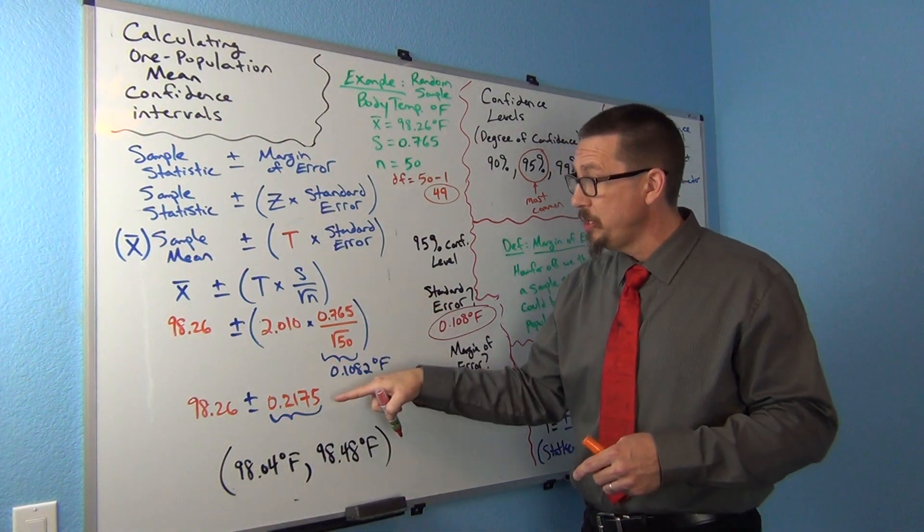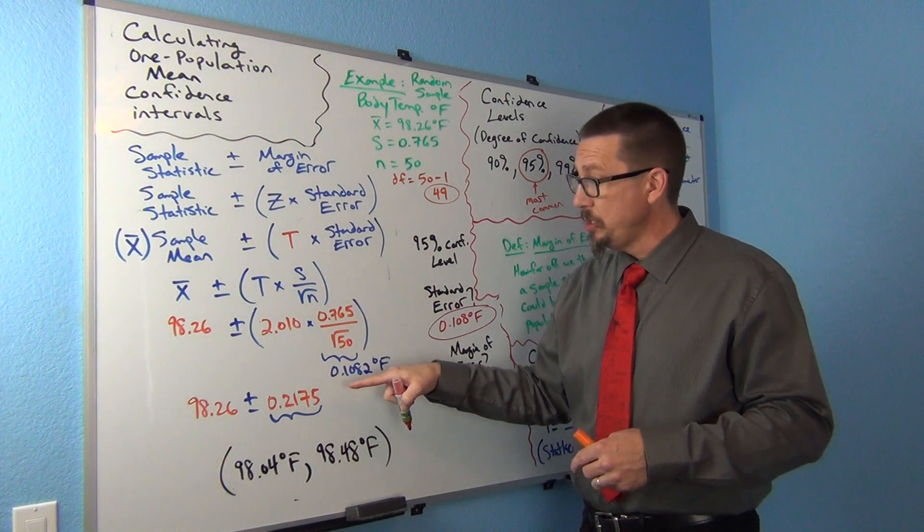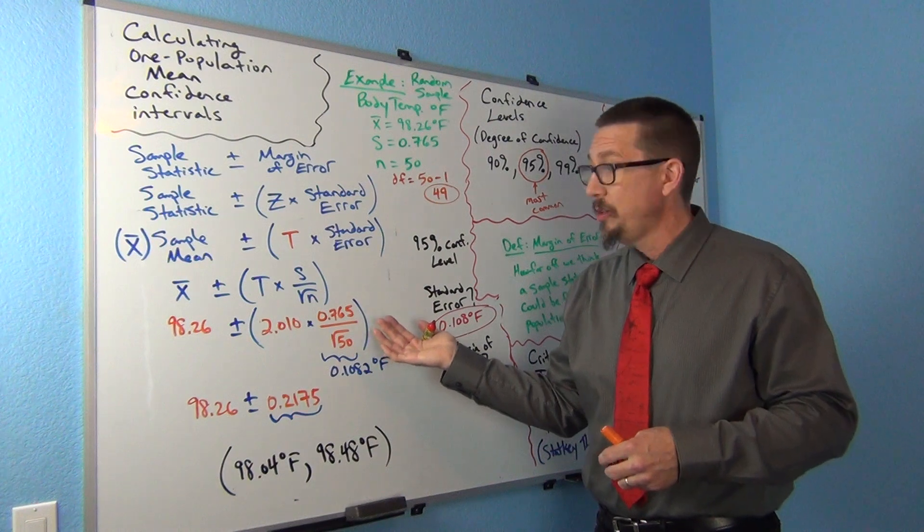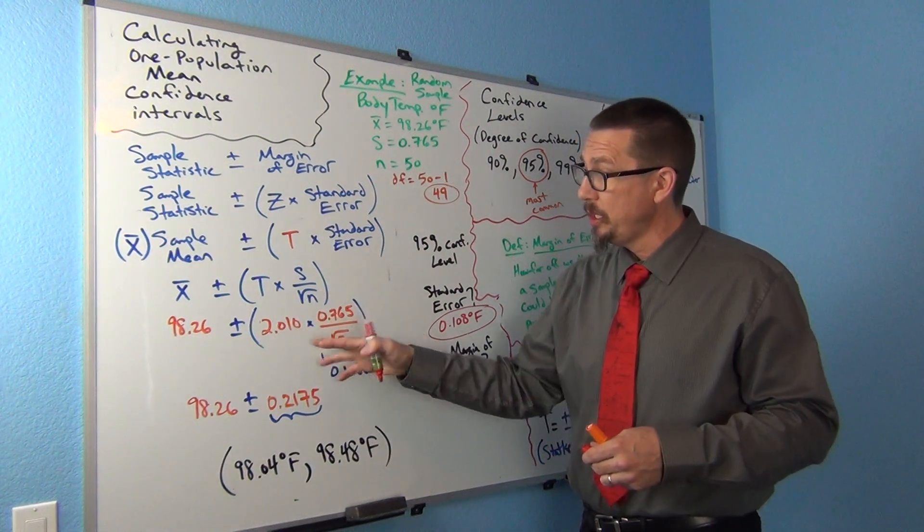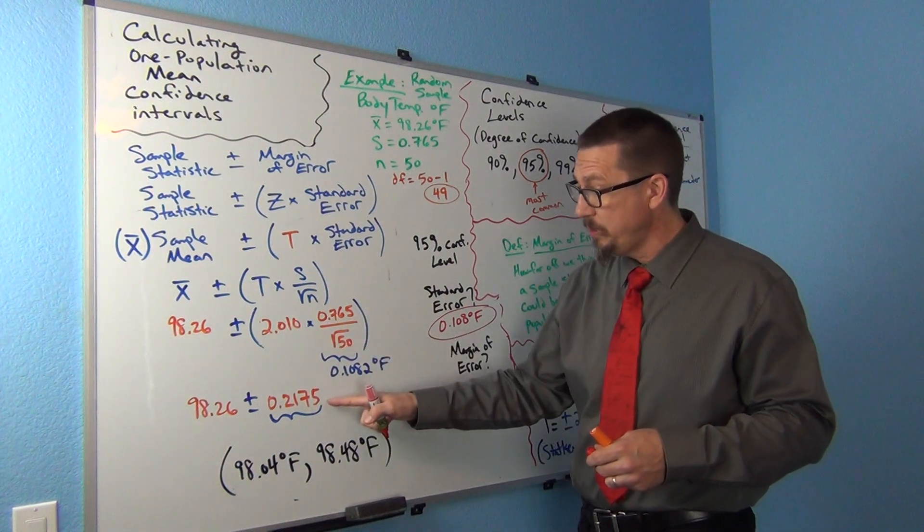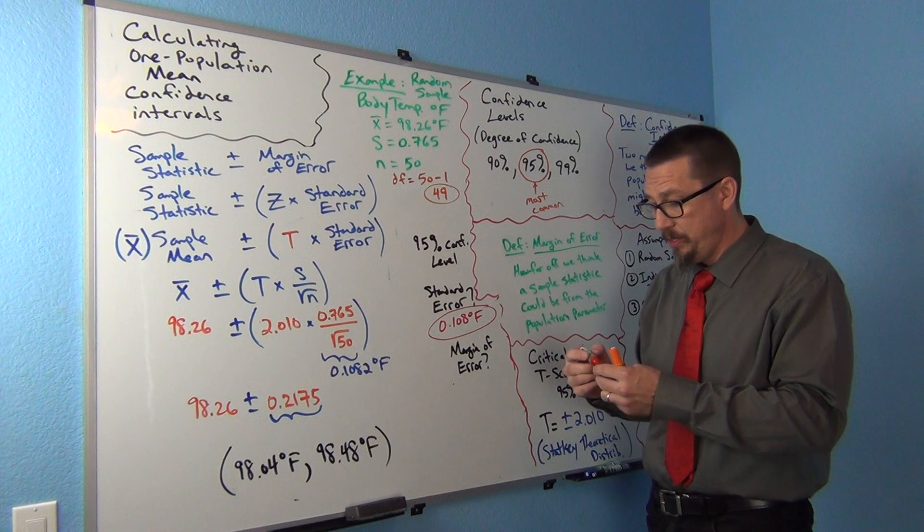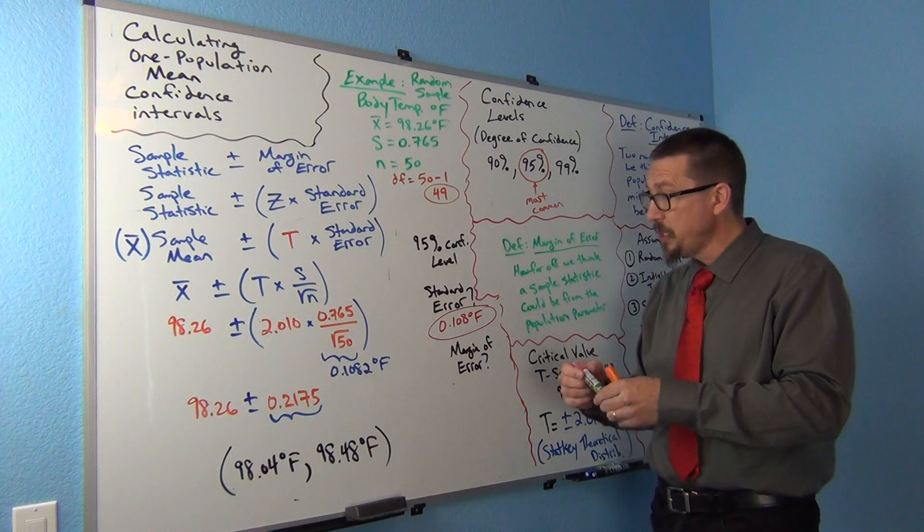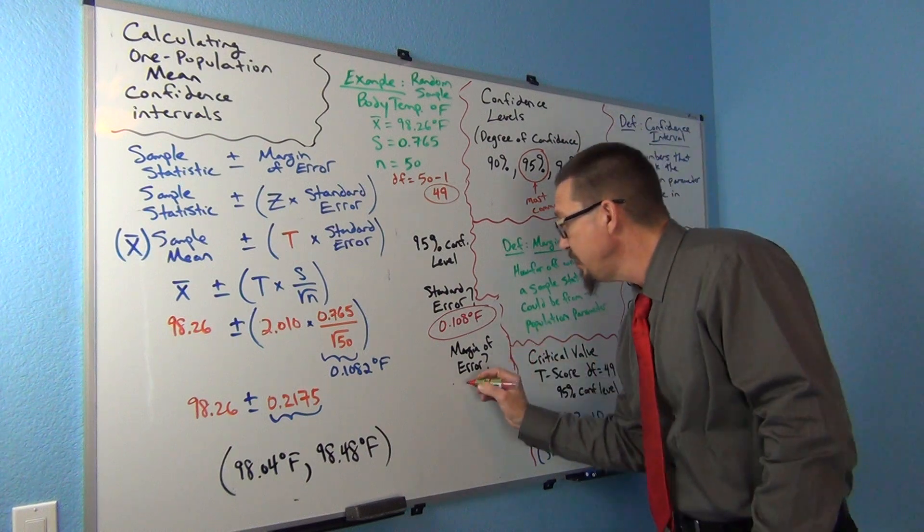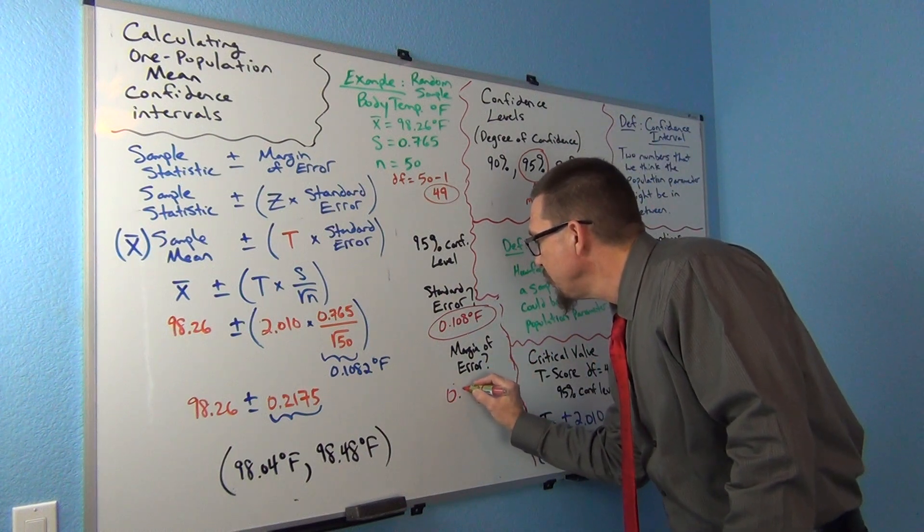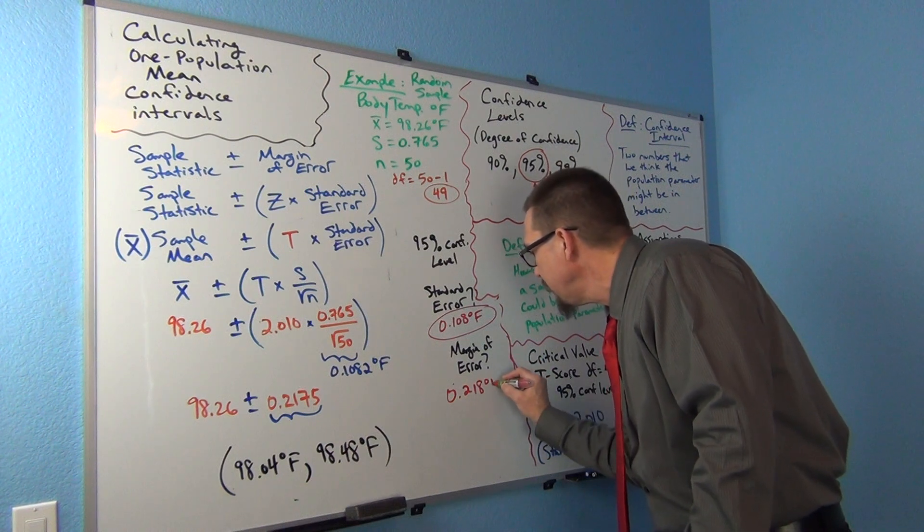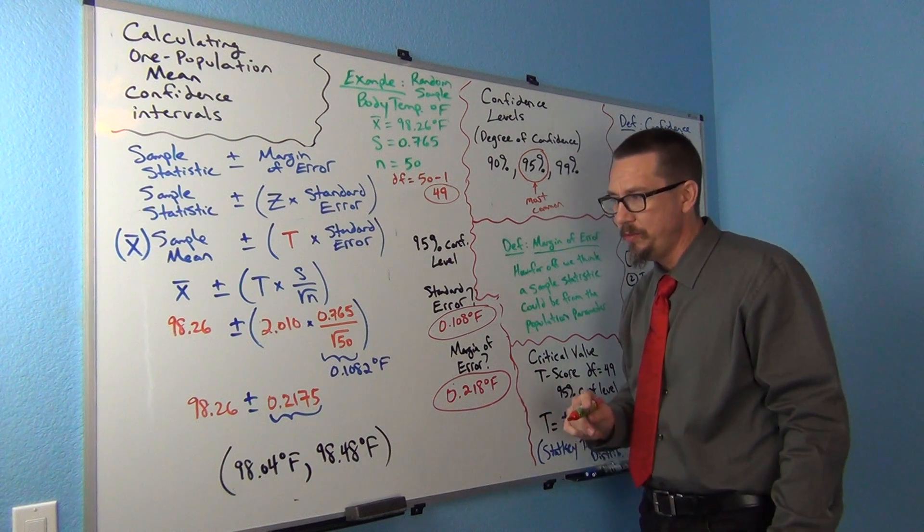Remember, standard error and margin of error are not the same thing. The margin of error is usually almost twice as big as the standard error. It will be calculated by multiplying the critical value times the standard error. The margin of error estimate for this one is about 0.2175. This is all degrees Fahrenheit. This is all quantitative data. We're not dealing with percentages here. So there's our margin of error.